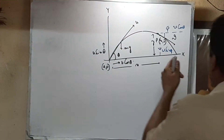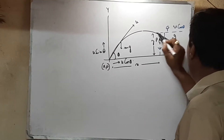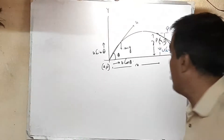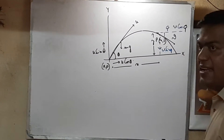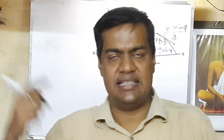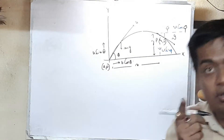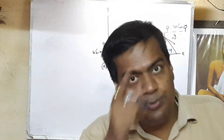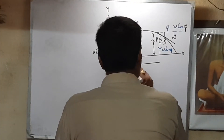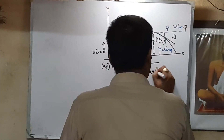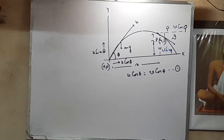The horizontal component of velocity at each point of the trajectory will remain the same. So we have v cos phi equals u cos theta. The horizontal component is v cos phi, and the vertical component v sin phi will change because in the vertical direction there is an acting force. This equation relating v cos phi and u cos theta is our key result.